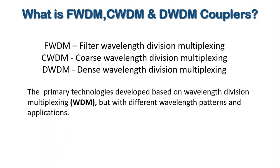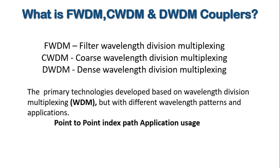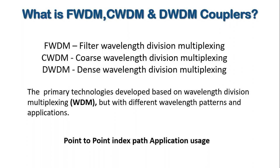FWDM allows running wavelengths to the core for transfer and general travel. Dividing by one point gives three categories, which allows point-to-point index path applications. This means it will give a point and separate from the degree the relative distances.